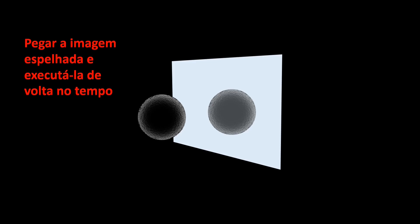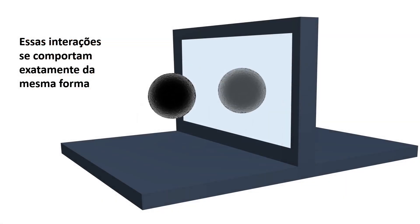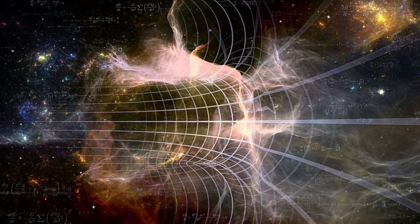Se você pegar cada interação observada na natureza e inverter as cargas, pegar a imagem espelhada e executar de volta no tempo, essas interações se comportam exatamente da mesma forma. Essa simetria fundamental recebe o nome de simetria CPT. C para carga, P para paridade e T para tempo.